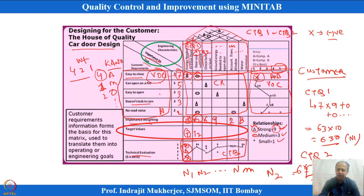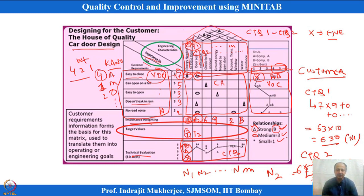Some numbers are arbitrary — the 9 and 3 ratings can be changed to 6, 3, 1 depending on the organization. That can influence the scores, but more or less the analysis reflects the same thing, because the relative ranking of strong versus weak relationships remains. Which CTQ is important will not change, because the importance is given by the customer and the Kano importance is fixed.